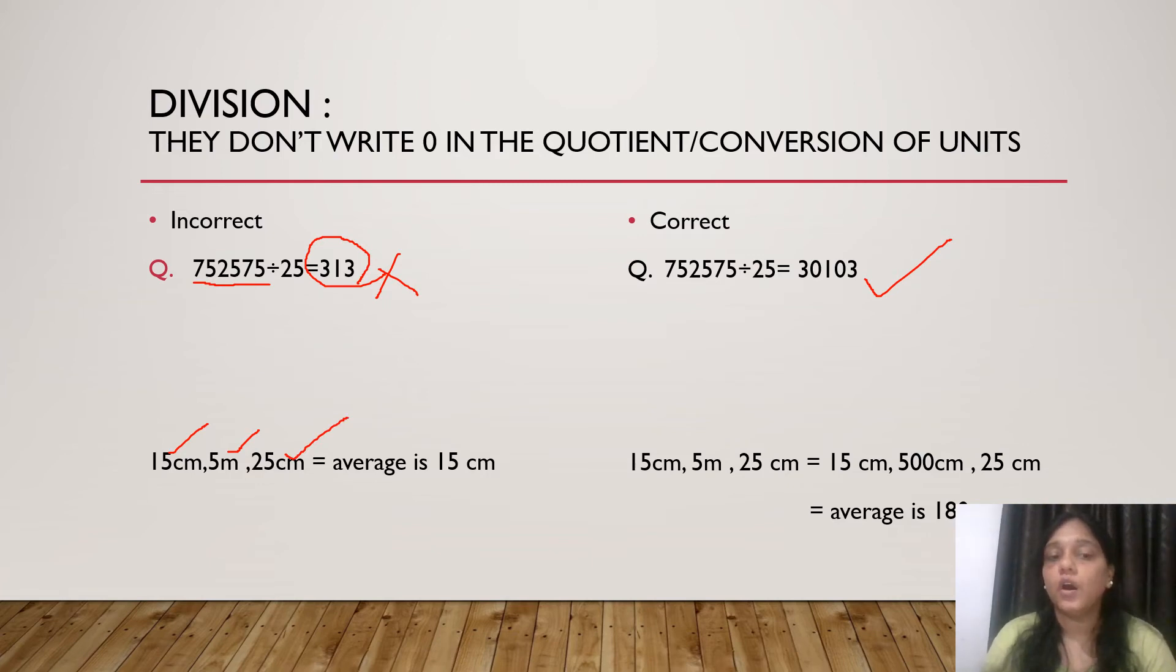The units of three numbers are different. Both these numbers are in centimeter. But the middle number is in meter. But students forget to convert these units. And they simply add these numbers. They get 45 divided by 3. They get 15 which is wrong. They have to convert middle number meter into centimeter. So the first number will be 15cm. Second number 500cm. Third number will be 25cm. They will add these three numbers and divide by 3. They get 180 which is the correct answer.